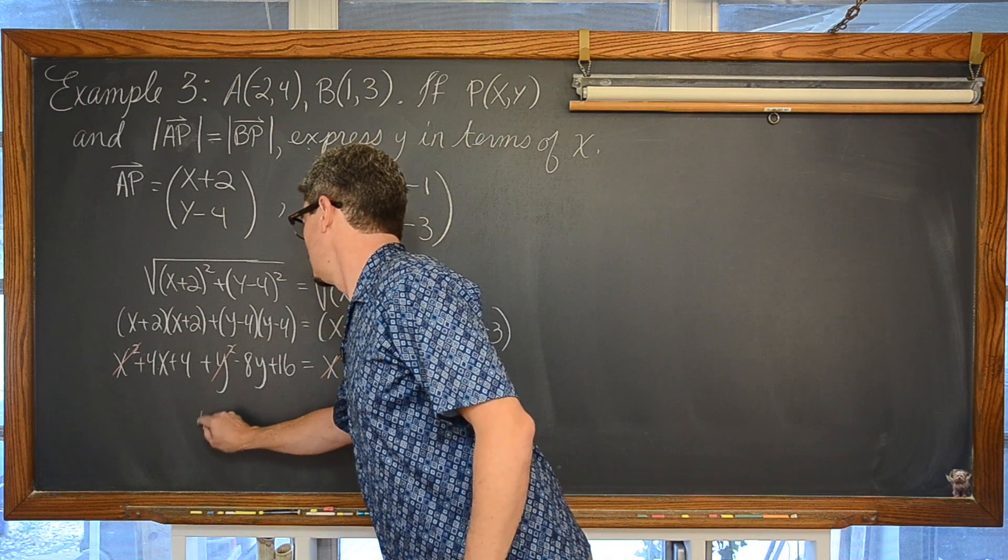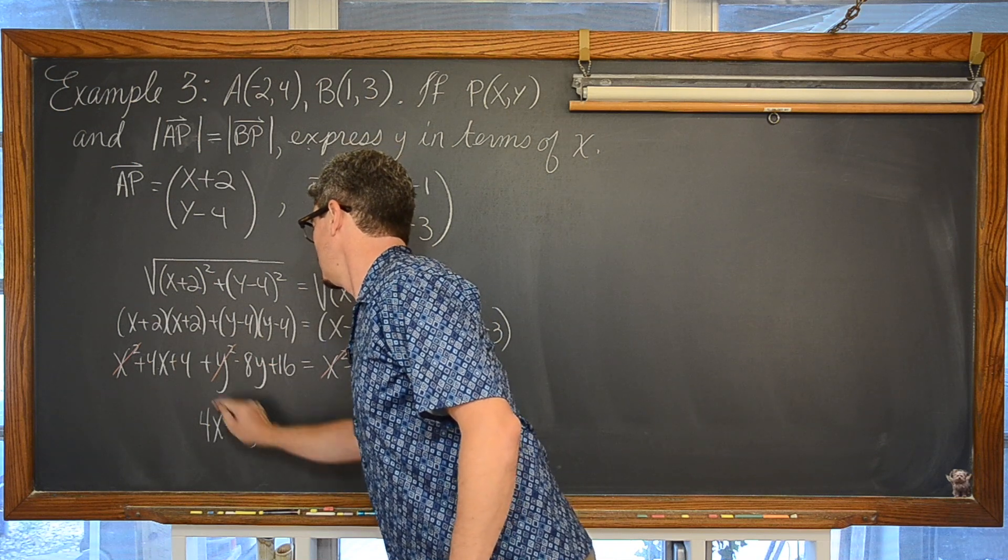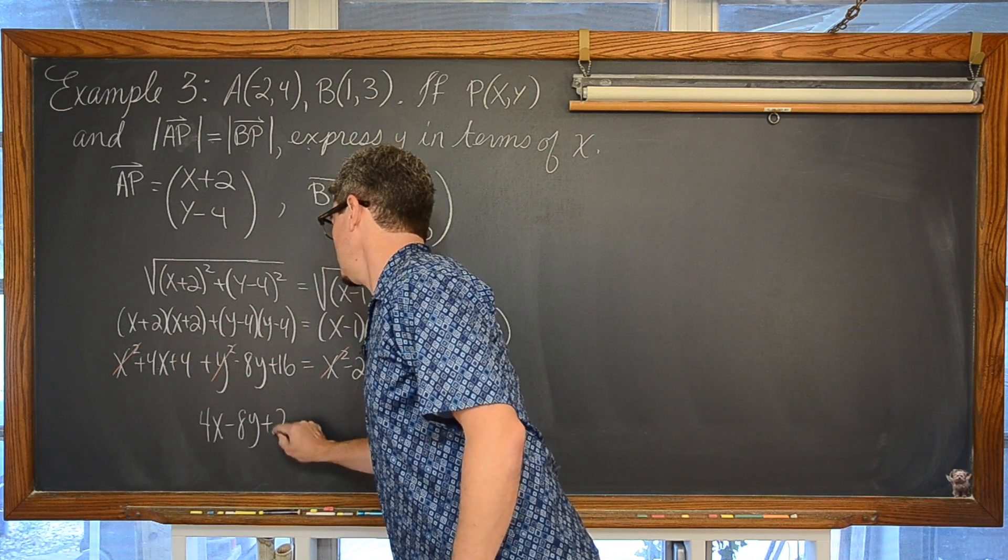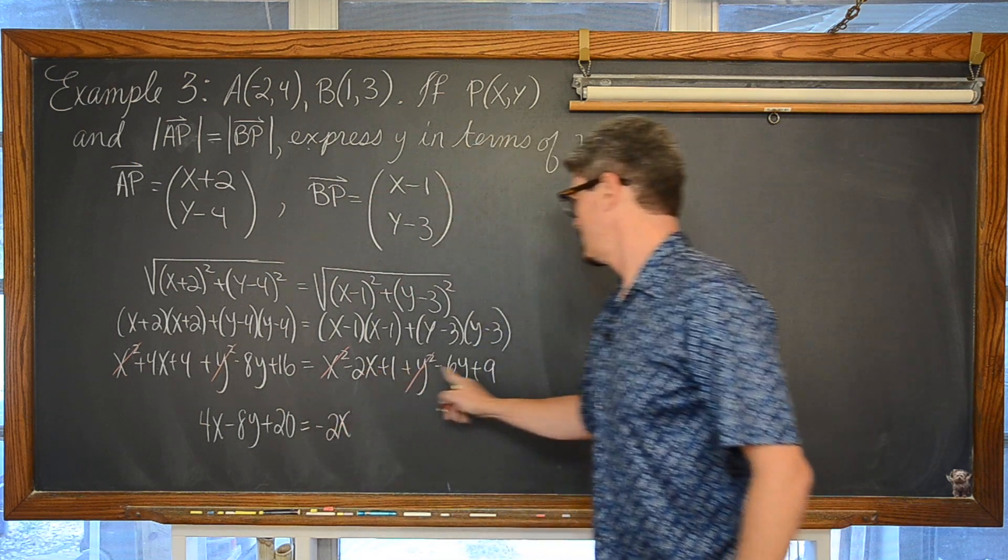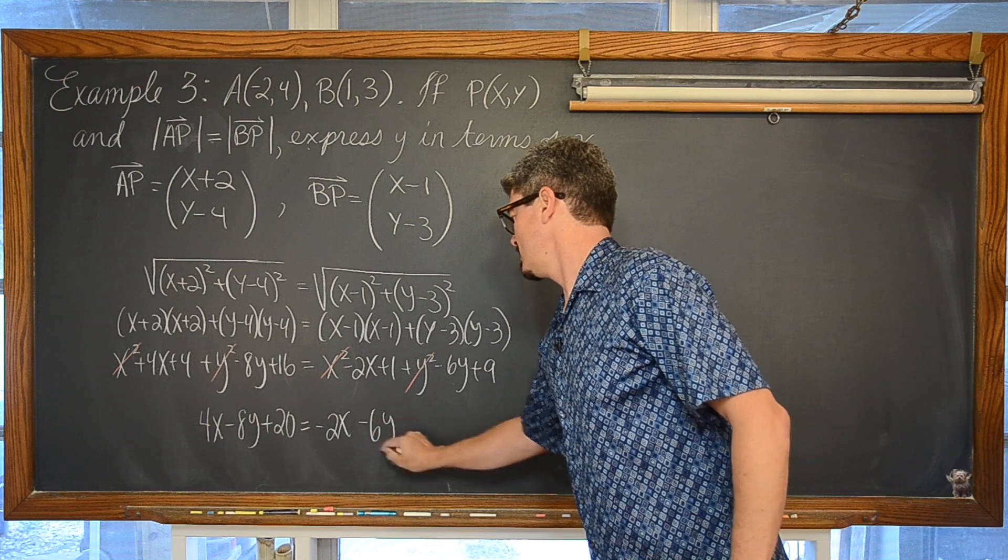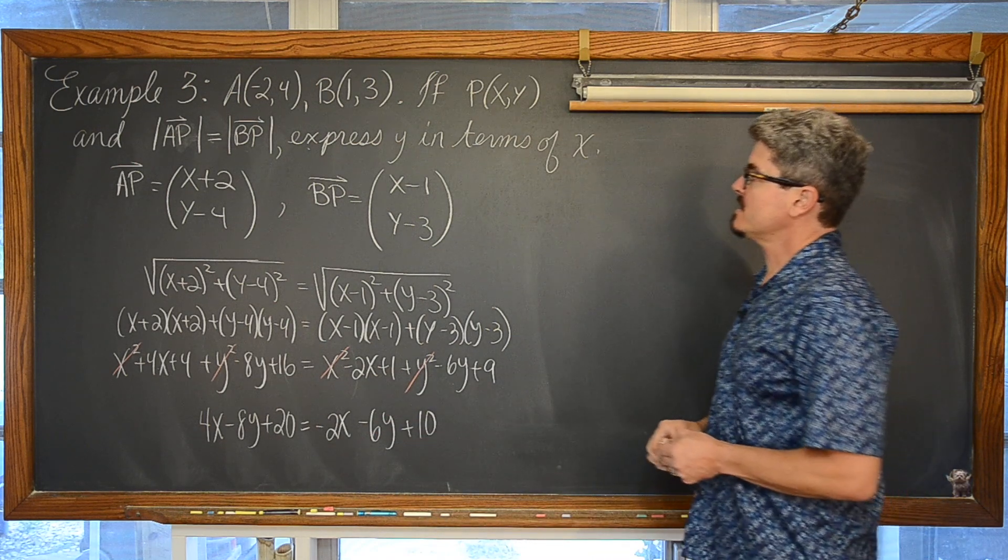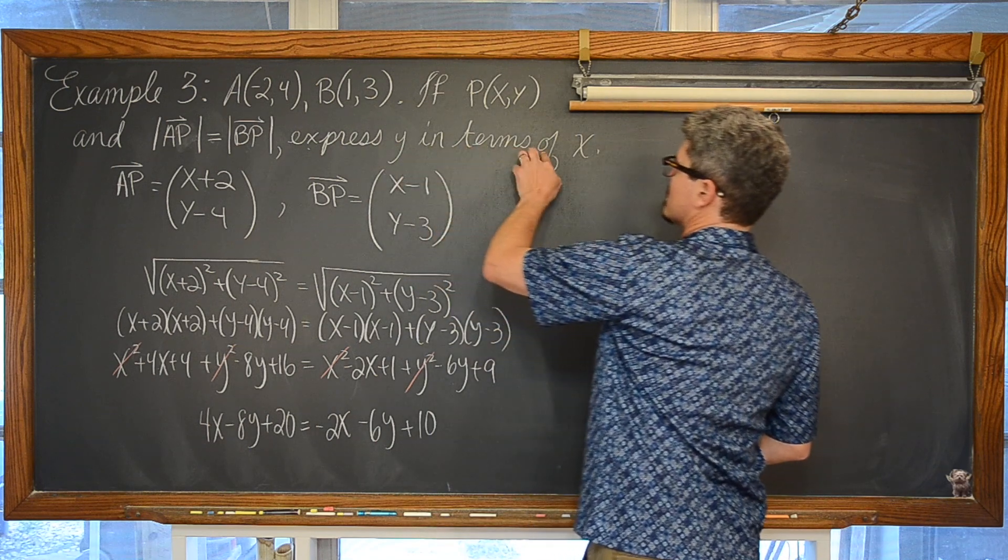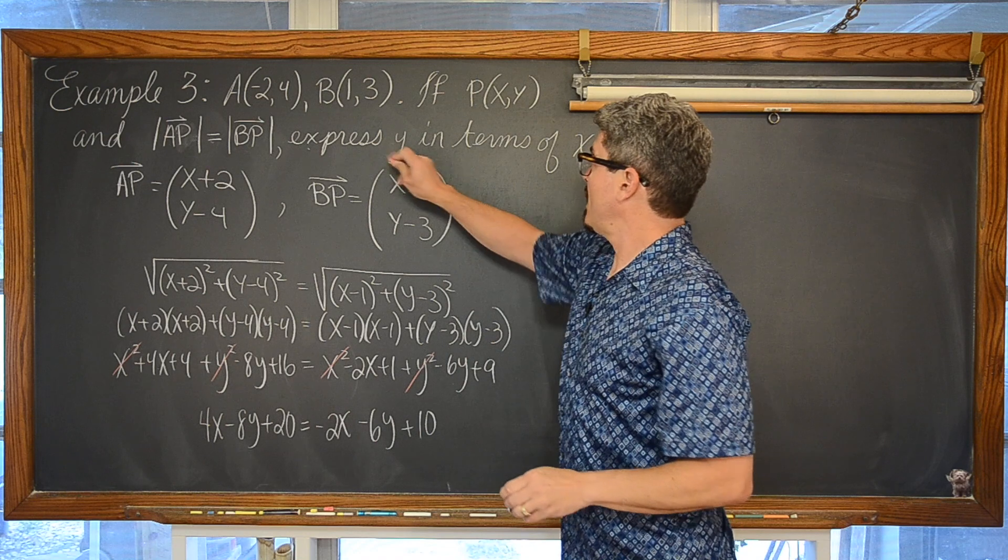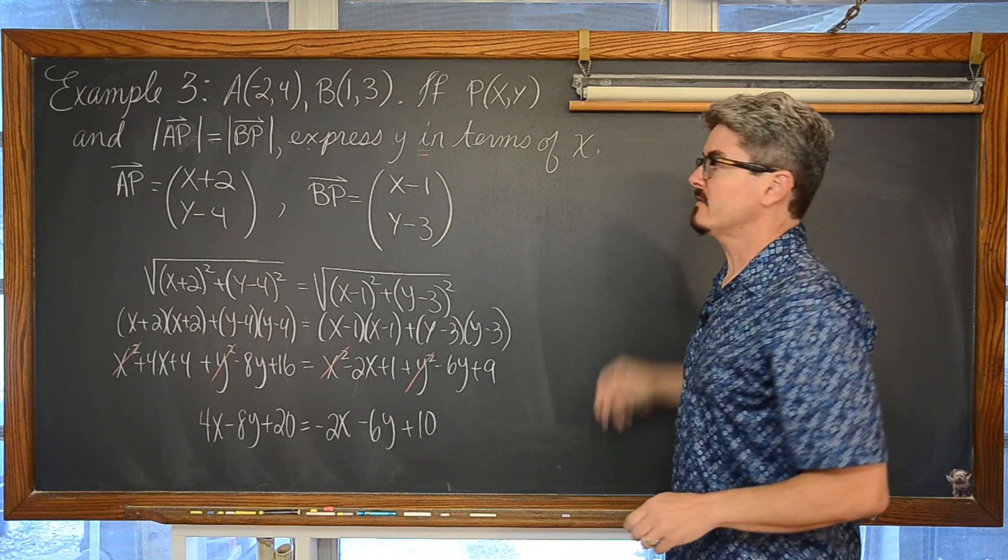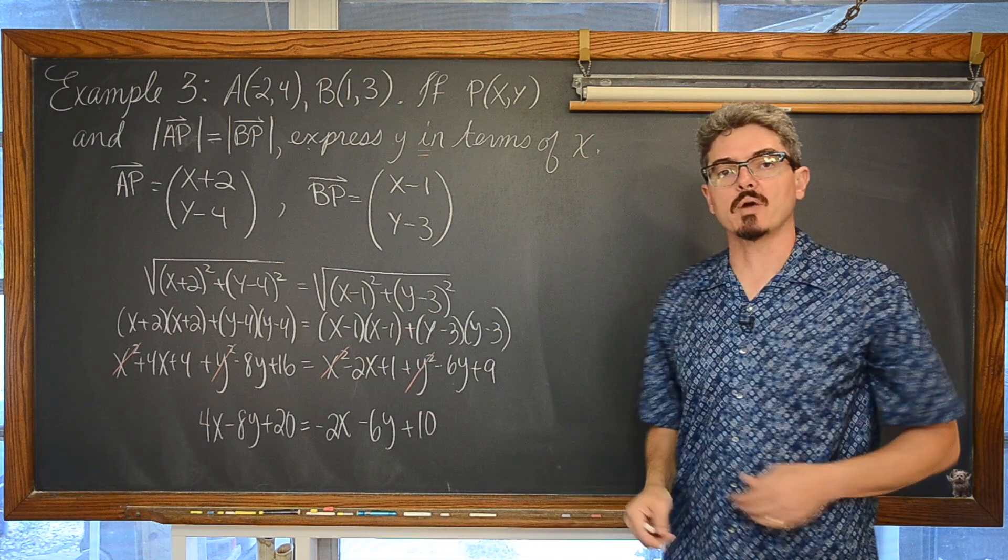Add some like terms. We have 4x minus 8y. We have 4 and 16 is 20. We have another negative 2x minus 6y plus 10. And it says express y in terms of x, right? So we know that. Of course, we just need to have y equals some kind of expression with x in it. So I am going to move all the y's to the left and everything else to the right.